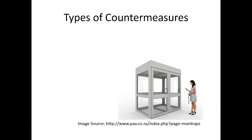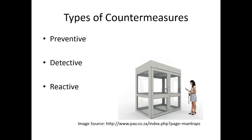Access control is a type of countermeasure, and countermeasures can be preventive, detective, and reactive. Since access control is a countermeasure, it can also be preventive, detective, and reactive. When we say preventive, we mean we're trying to keep any threat — especially in terms of access control — from getting materialized, preventing any compromise.